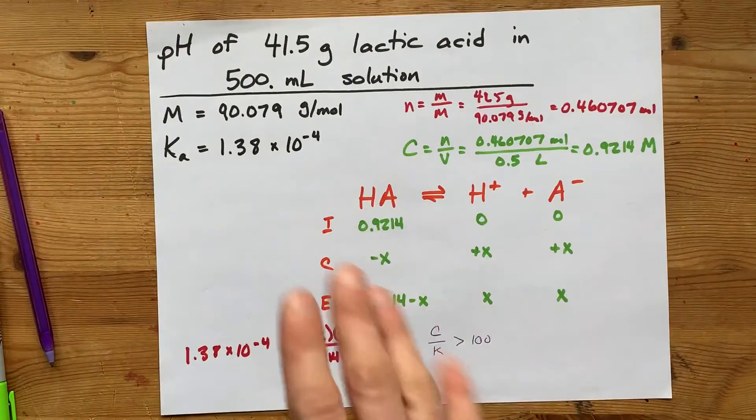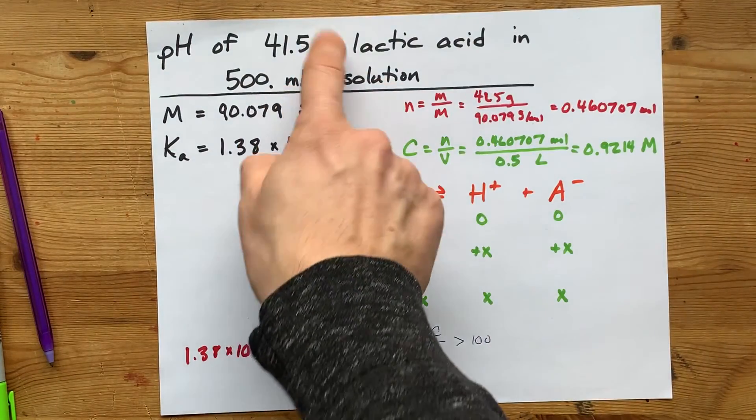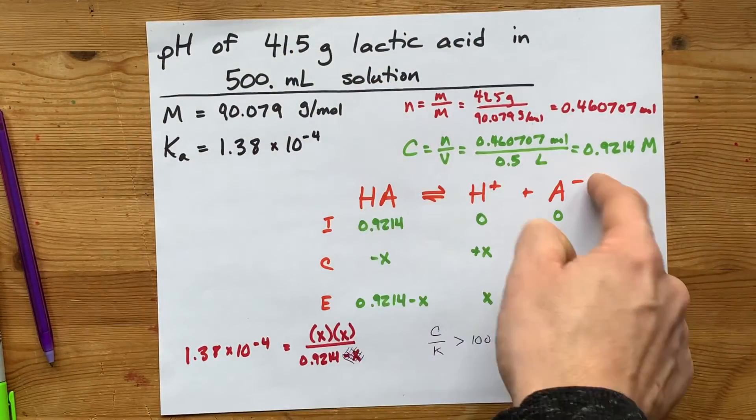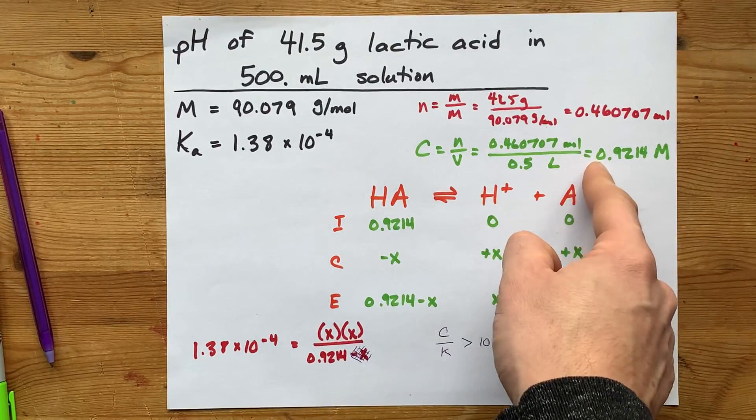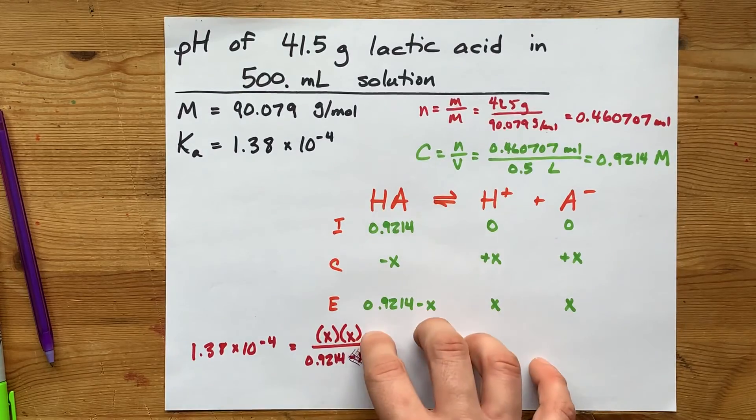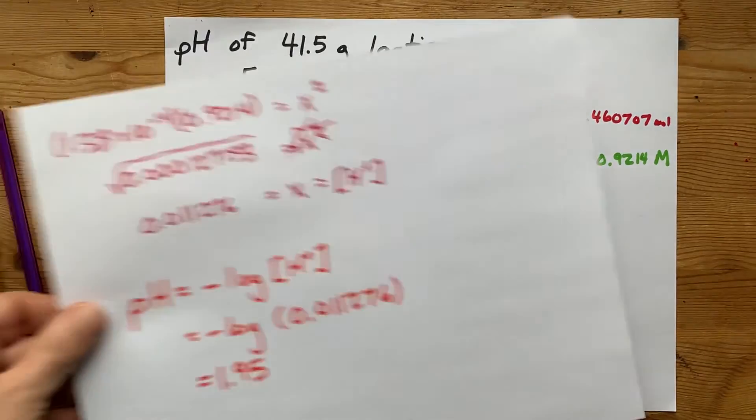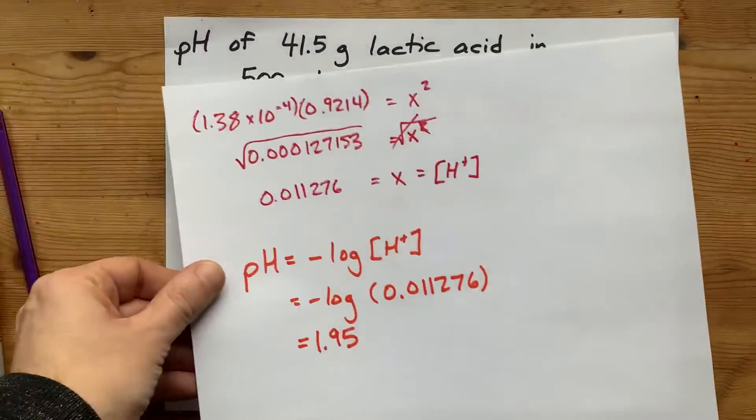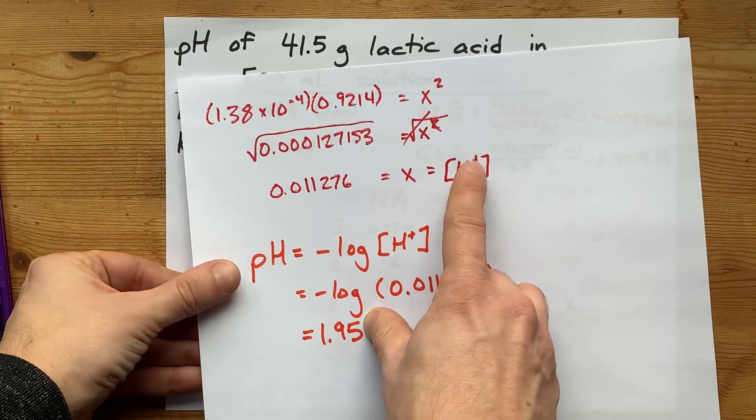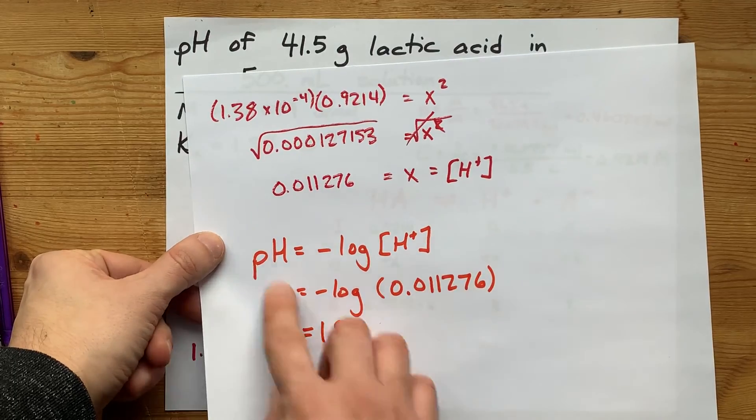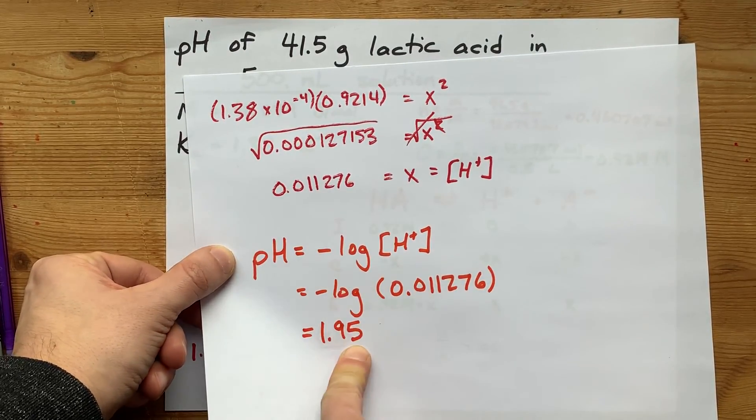pH is 1.95. But how did you do it? You converted grams and milliliters into a concentration by converting grams to moles, then moles to moles per liter. Then you had to do an ice table and a Ka calculation with an assumption in order to find X, the equilibrium concentration of H+. That's what you take the negative log of to get pH.